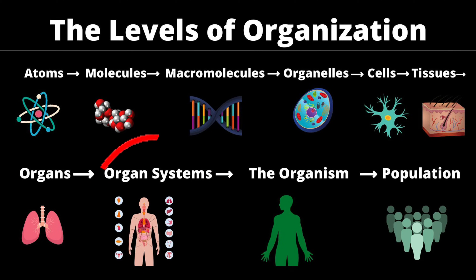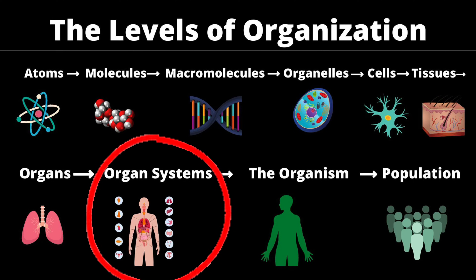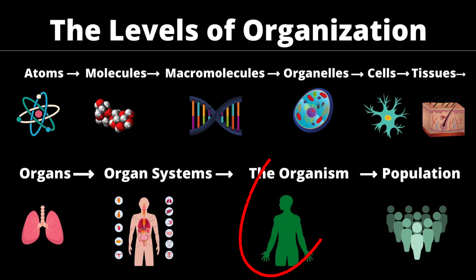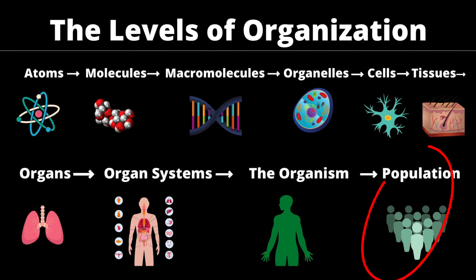The respiratory system, the endocrine system, the nervous system, the cardiovascular system — all make up you, the organism. And you, the organism, make up a population.